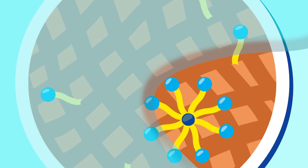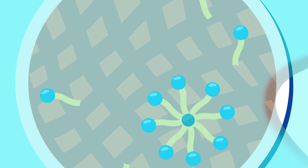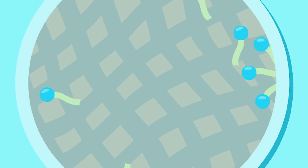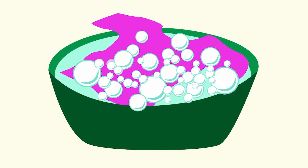Since the dirt and grease are still surrounded, they get washed away from the surface and into the water. That's how surfactants help remove dirt, grease, and germs from clothes and other surfaces.